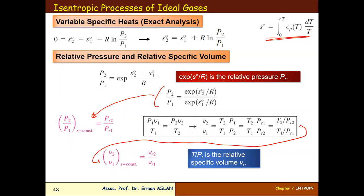For specific exact analysis, this is the isentropic process expression: S2° minus S1° minus R·ln(P2/P1) equals zero. This is from the second formulation. For the exact analysis, S2° can be defined from the ideal gas tables.